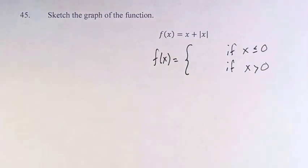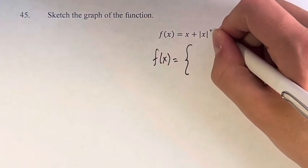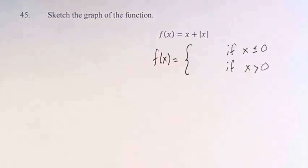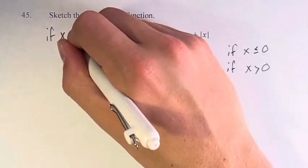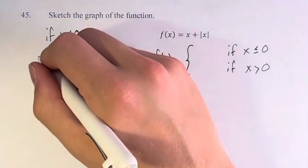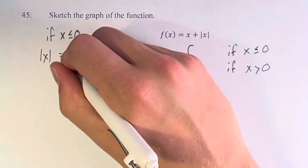How are we going to find this? Well, think about what it actually means for the absolute value to be taken of x. If x is less than or equal to 0, then the absolute value of x is equal to negative x.